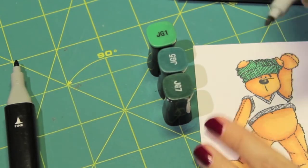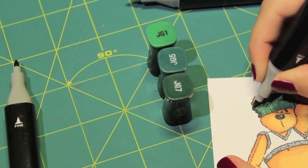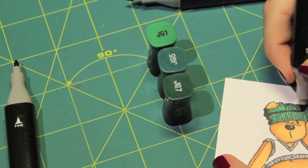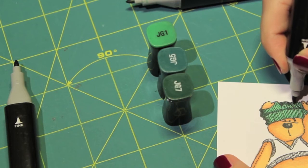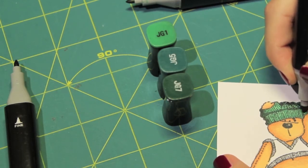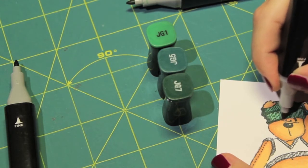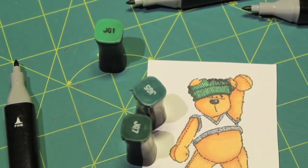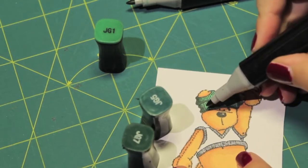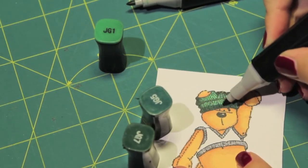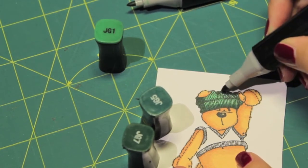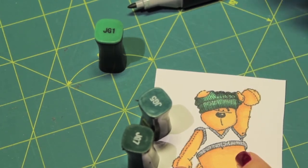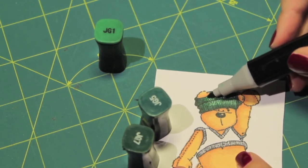And then we take the darkest color, and we just work where we want our shadows to be. So we're going to start here, and it's going to have a little shadow on top of that. There's going to be some shadows in his hat like this. And then on the bottom of his hat. And then we use the 5 to just blend that out. And then we finish off with the brightest color.